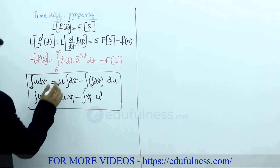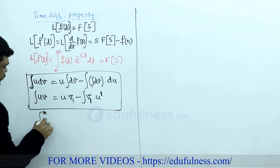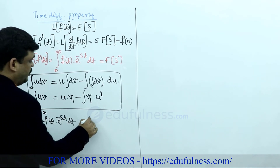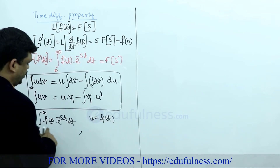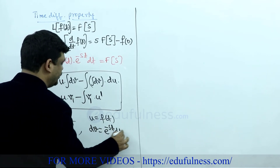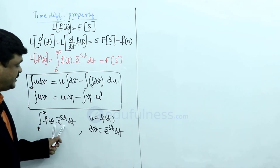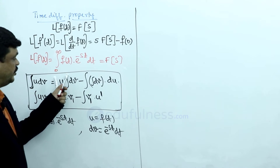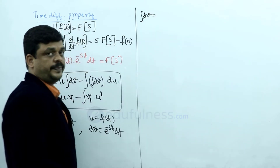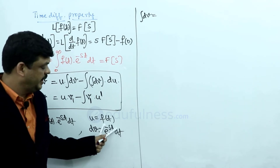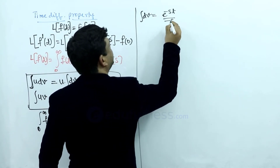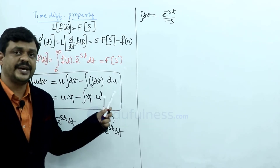Now I want to apply this to the given function: integration from 0 to infinity of f(t) into e^(−st) dt. I am assuming u = f(t) and dv = e^(−st) dt. So integral of dv becomes e^(−st) / (−s), and du is the differentiation of u, which is d/dt of f(t), written as f'(t).